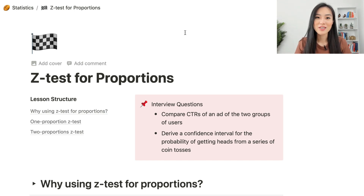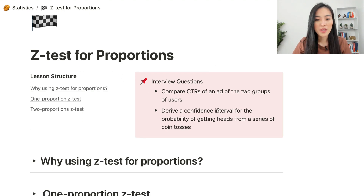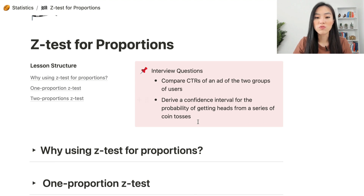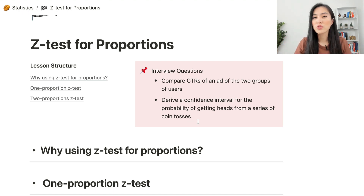In this video, let's talk about using the z-test for proportions. There are quite some interview questions related to this topic. You might get interview questions to compare click-through rates of an advertisement of two groups of users. Another example is that the interviewer might ask you to derive a confidence interval for the probability of getting heads from a series of coin tosses. For these questions, you need to use the z-test for proportions to conduct the hypothesis test and draw conclusions.